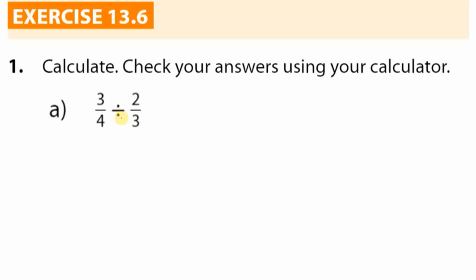This is still applying the same process. We have three-quarters, but now instead of division we have the multiplication sign. We pay a price as soon as we change the sign: the three goes upstairs and the two comes downstairs. Now we are back to normal multiplication — we can multiply tops and multiply bottoms. I don't see any factors that can cancel.